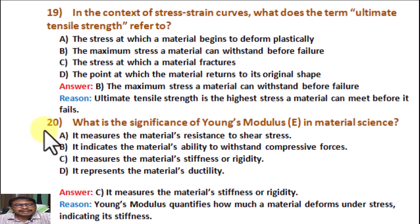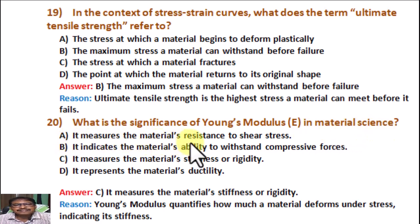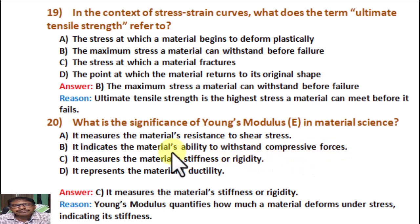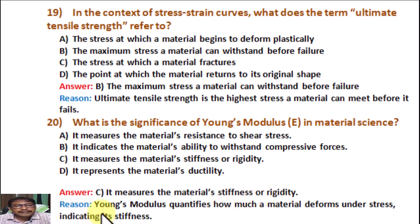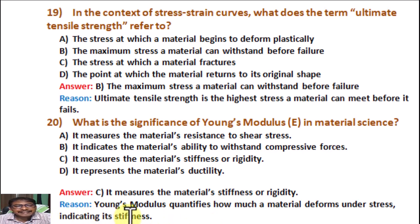Question number 20. What is the significance of Young's modulus E in material science? Option A: It measures the material's resistance to shear stress. Option B: It indicates the material's ability to withstand compressive stress. Option C: It measures the material's stiffness or rigidity. Option D: It represents the material's ductility. Correct answer is C: It measures the material's stiffness or rigidity. Reason: Young's modulus quantifies how much a material deforms under stress, indicating its stiffness.